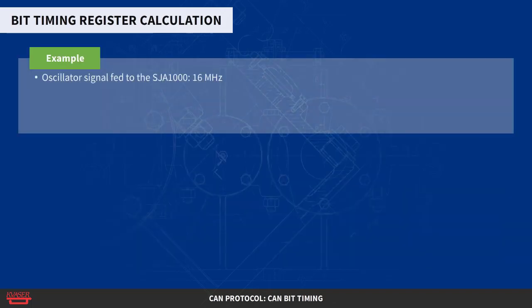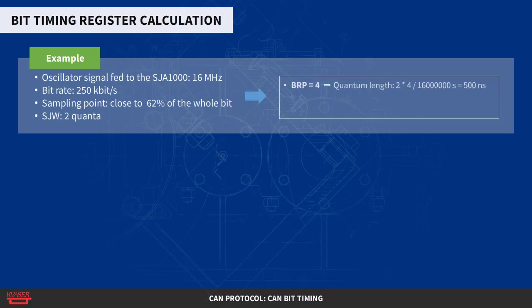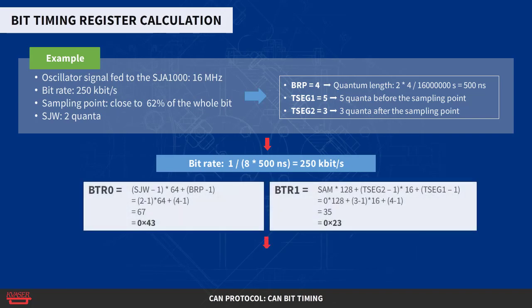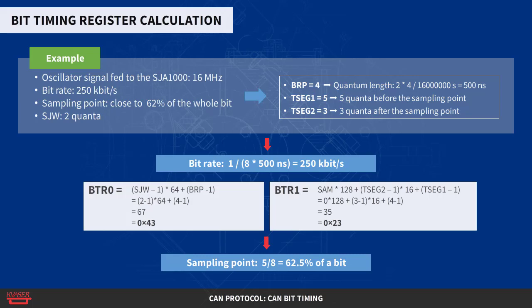If the oscillator signal fed to the SJA1000 is 16 MHz, and we want a bit rate of 250 kilobits per second with a sampling point close to 62% of the whole bit and a SJW of two quanta, we can set BRP equals 4, which gives a quantum length of 2 × 4 / 16,000,000 seconds equals 500 nanoseconds. TSEG1 equals 5, giving 5 quanta before the sampling point, and TSEG2 equals 3, giving 3 quanta after the sampling point. Each bit will then comprise 5 plus 3 equals 8 quanta, resulting in a bit rate of 1 / (8 × 500 ns) equals 250 kilobits per second. The sampling point is at 5/8 equals 62.5% of a bit.